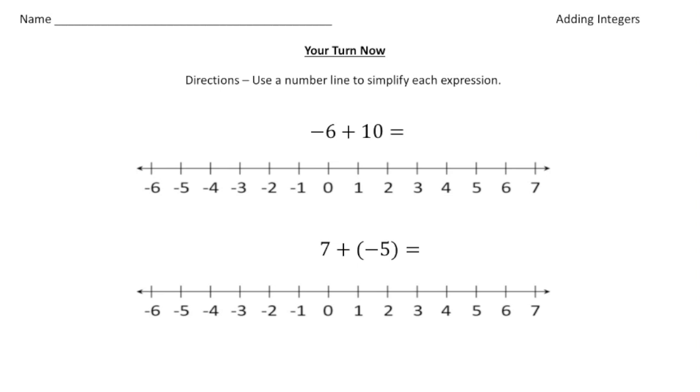Welcome back. Let's see what I do with these practice problems. So the first problem we have is negative 6 plus 10. So starting at negative 6. And because we're adding a positive, we're going to go to the right and we're going to go to the right 10 spots. So here we go.